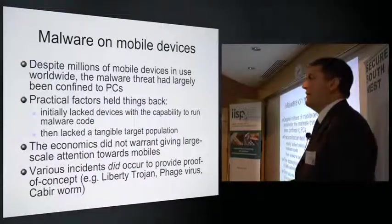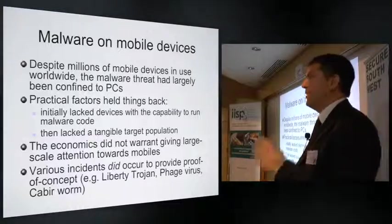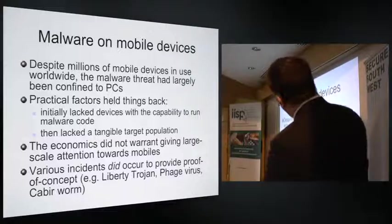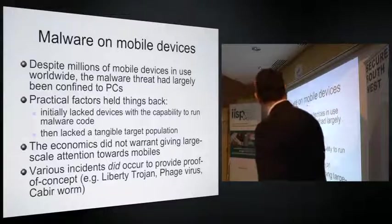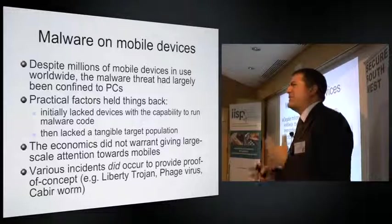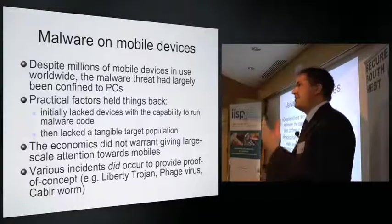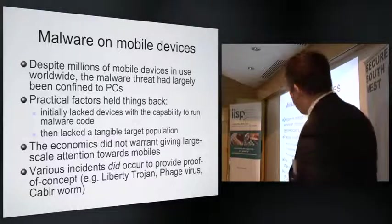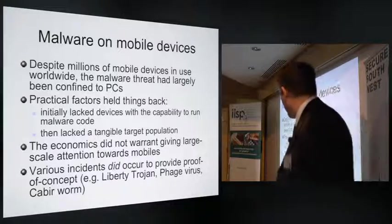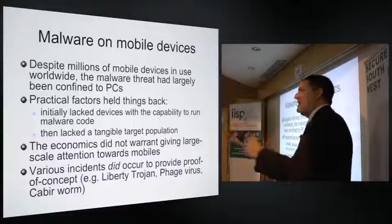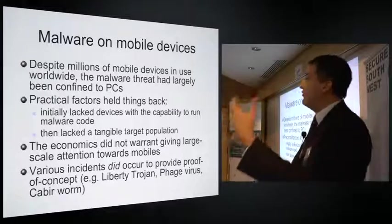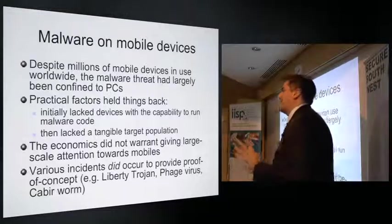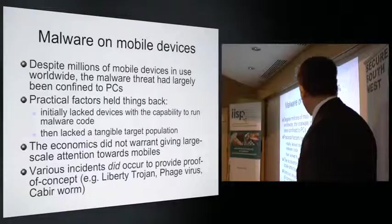The biggest growing threat is malware. It's been predicted for quite some time — malware was always suggested to be coming to cell phones and then smartphones. Early examples include the Liberty Trojan, the Phage virus, and the Cabir worm, which interestingly spread via Bluetooth and explicitly asked you on screen for permission to infect your device — and some people let it do so. But previously, practical factors had held things back: not many devices could run executable code, and there wasn't a big target population.